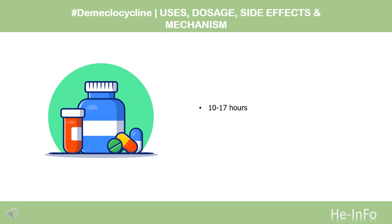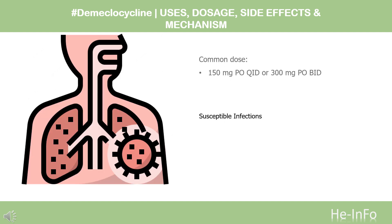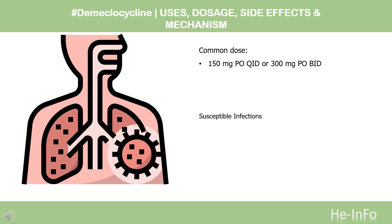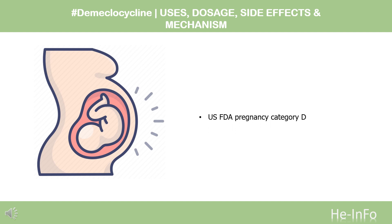Half-life: 10–17 hours. Dose for susceptible infections: 150 mg four times daily (PO QID) or 300 mg twice daily (PO BID). D-meclocycline has been assigned to pregnancy category D by the FDA. Animal studies have revealed evidence of embryotoxicity and teratogenicity associated with the use of tetracyclines.